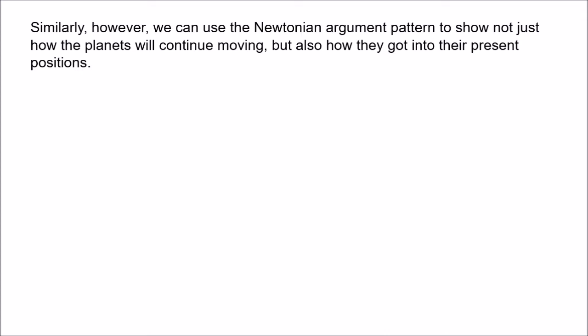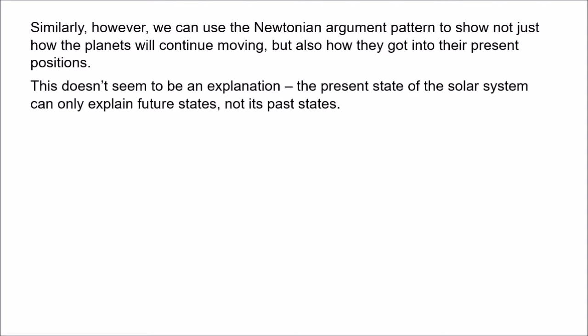It seems that this is a case of unification, but it doesn't seem to be an explanation. The thought is that the present state of the solar system only explains its future states, not its past states. We basically apply exactly the same argument pattern to derive past states of the solar system, but we wouldn't think the present state explains past states. Again, there's an explanatory asymmetry, and it looks like the asymmetry is produced by causation — past states cause present states, present states cause future states.